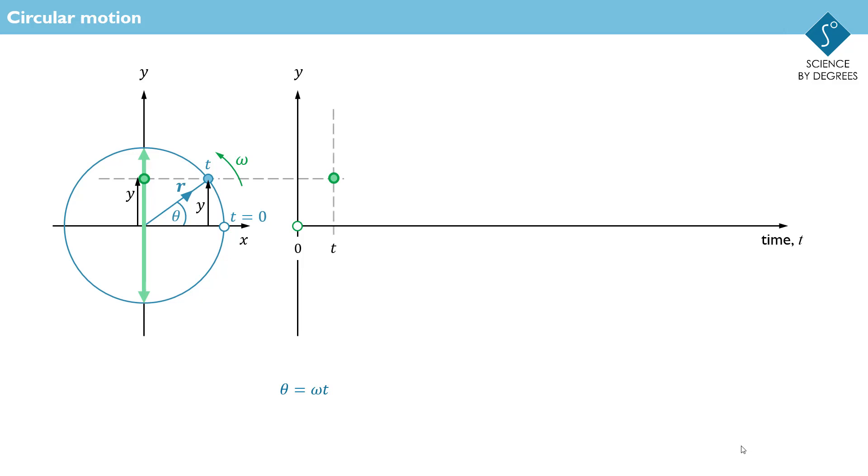Then, if we continue the motion, quarter of a revolution after the start, the vertical displacement is at a maximum.